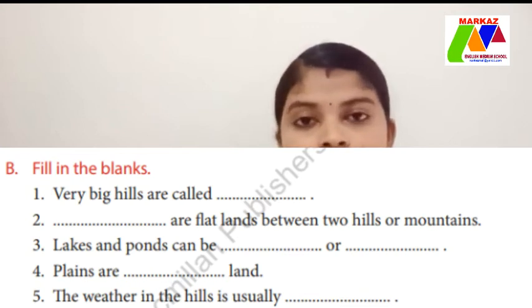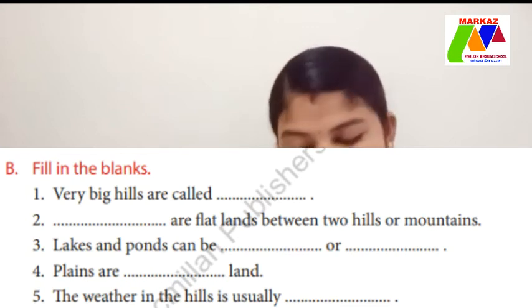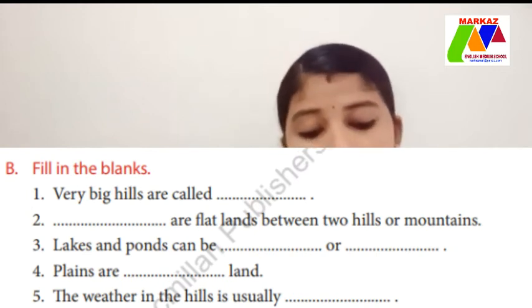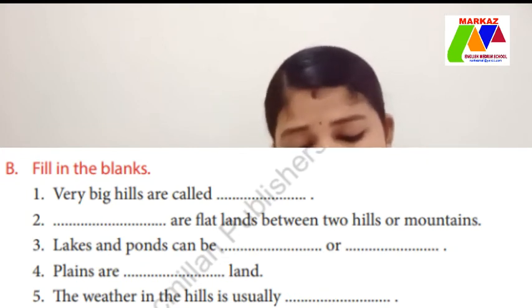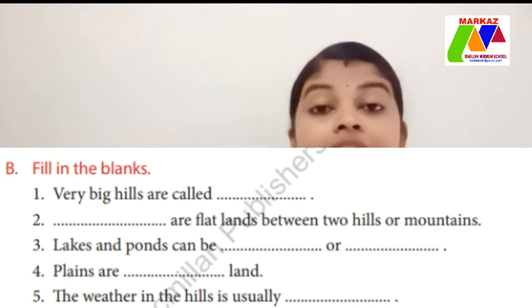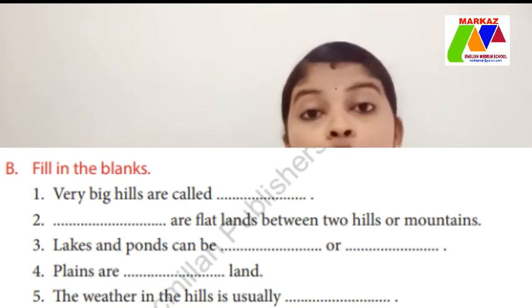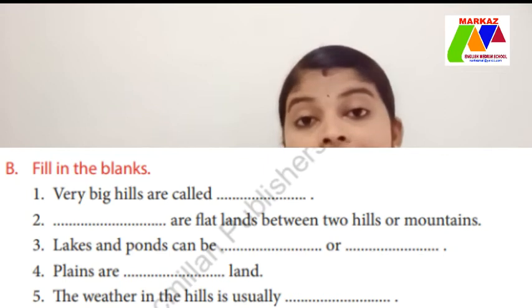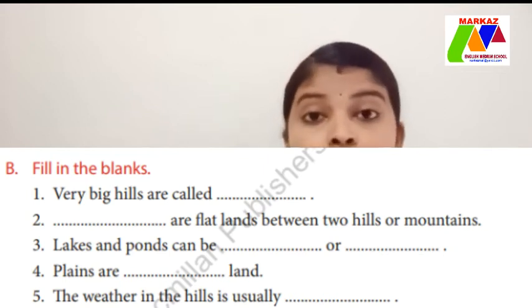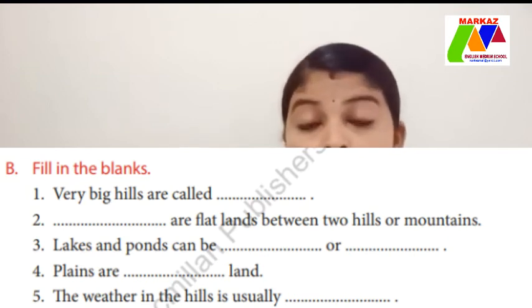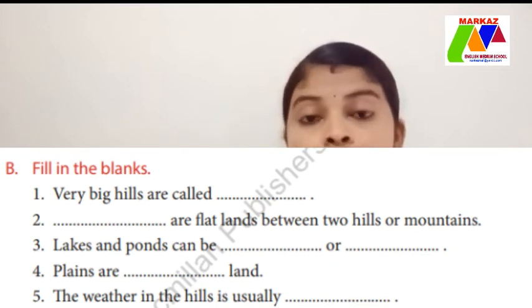The third one: 'Lake and pond can be blank or blank.' The answer is natural or human-made. N-A-T-U-R-A-L, natural, or H-U-M-A-N-M-A-D-E, human-made.